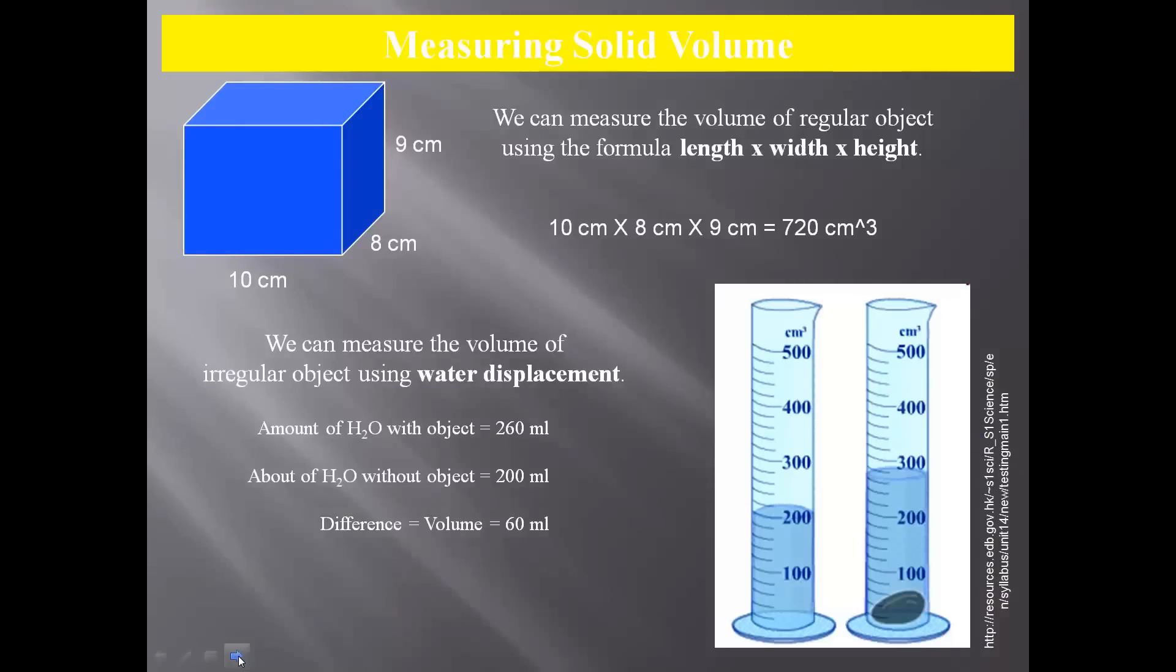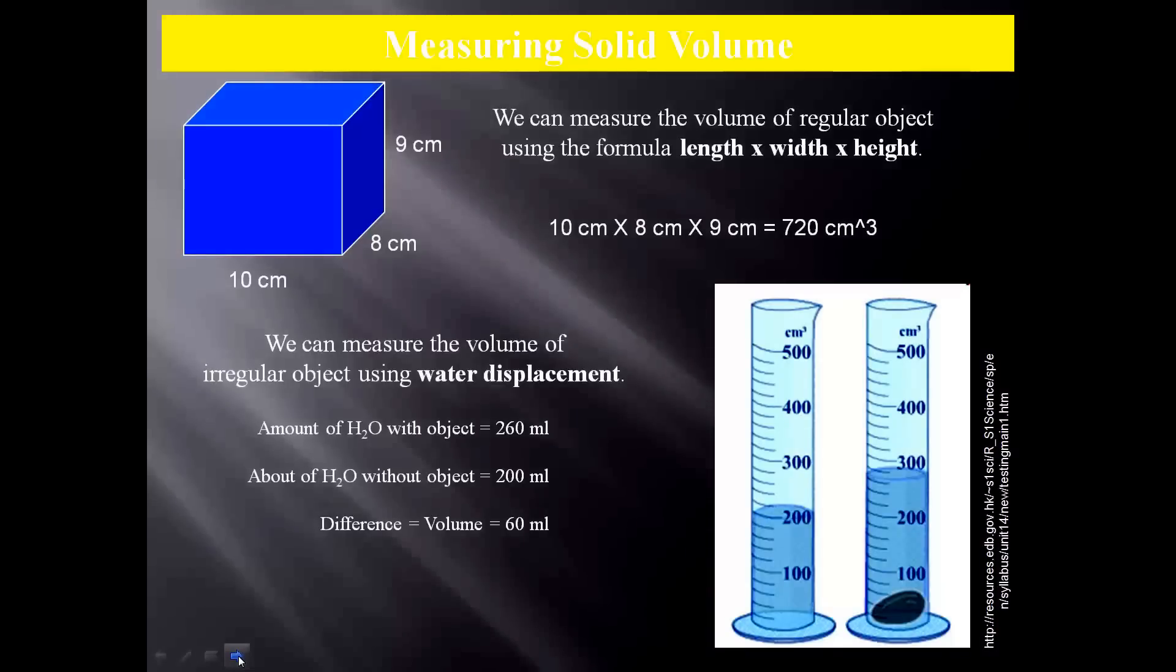When you have a solid and it's a regularly shaped object, you're very familiar with the length times the width times the height. In this example, we have something 10 centimeters by 8 centimeters by 9. If you do the math here, it comes out to 720 cubic centimeters.